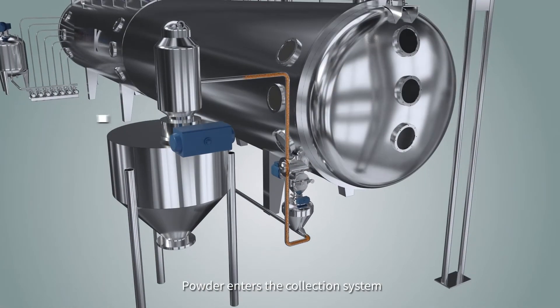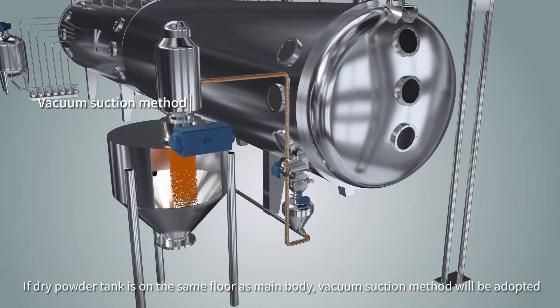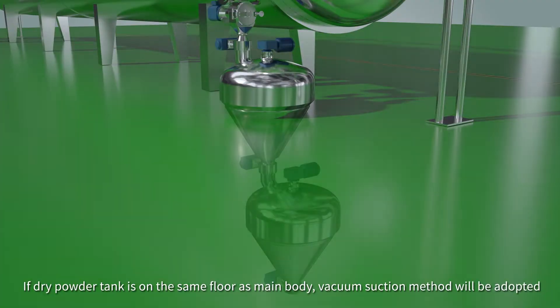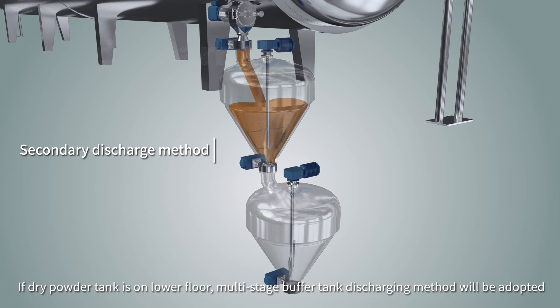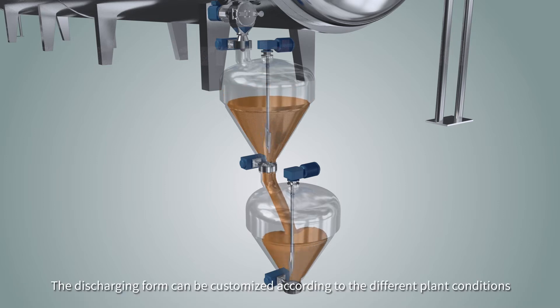Powder enters the collection system. If dry powder tank is on the same floor as main body, vacuum suction method will be adapted. If dry powder tank is on lower floor, multi-stage buffer tank discharging method will be adapted. The discharging form can be customized according to the different plant conditions.